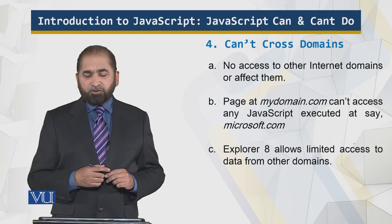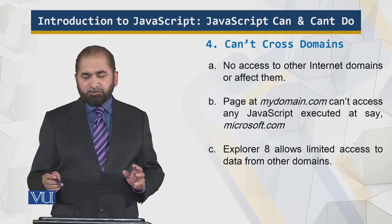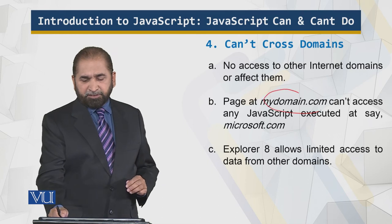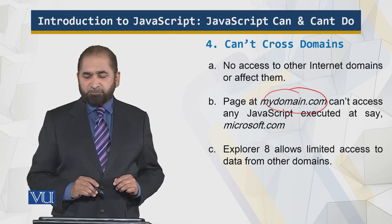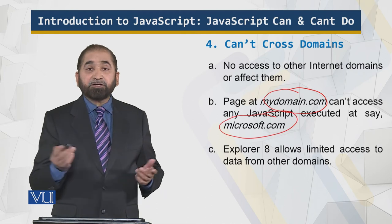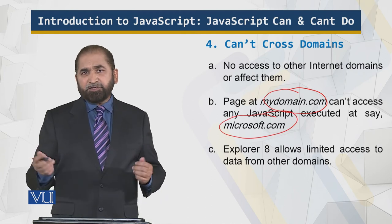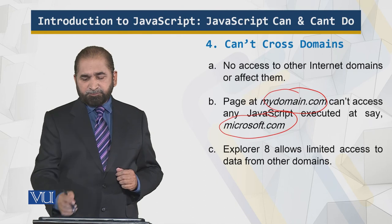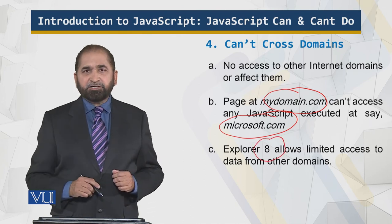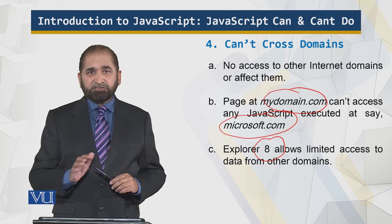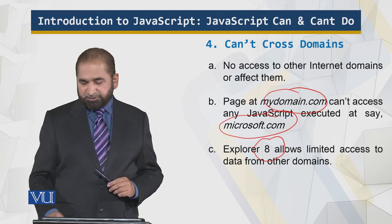JavaScript cannot cross domains — there is no access to other internet domains or the ability to affect them. If I am running my page at mydomain.com, JavaScript cannot access Microsoft.com or another domain. This is a big limitation. Explorer 8 allows some limited access to data, but that is not something standard in JavaScript.